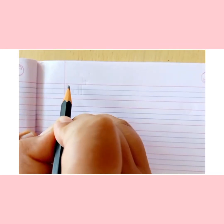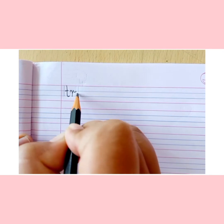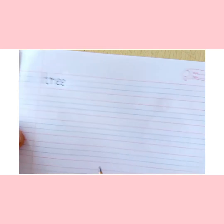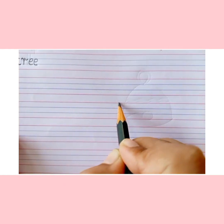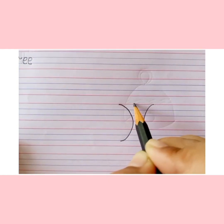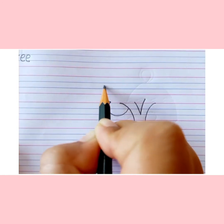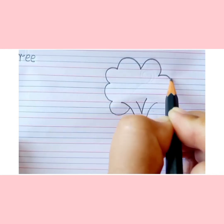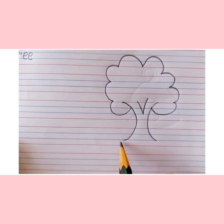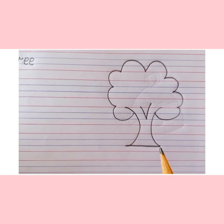Our next spelling is T-R-E-E, tree. Children, you already know how to draw a tree. Let's start. Opposite C curve, C curve, write a V inside, then start drawing curves like this and join. Below, join it with a sleeping line. A tree is ready. Write the spelling for 5 times.